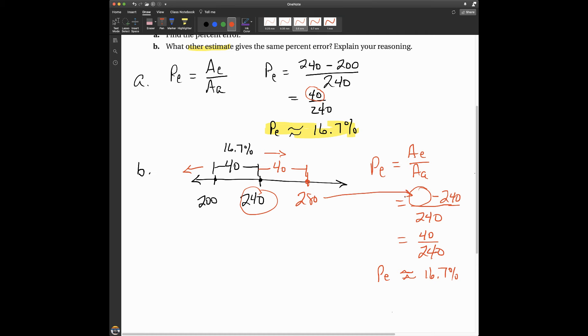So, I put that in there. And 280 minus 240 is 40. And so, notice I get this same relationship that I had up here, the same ratio. 40 to 240 here is 40 to 240. And that gives me the same percent of error.